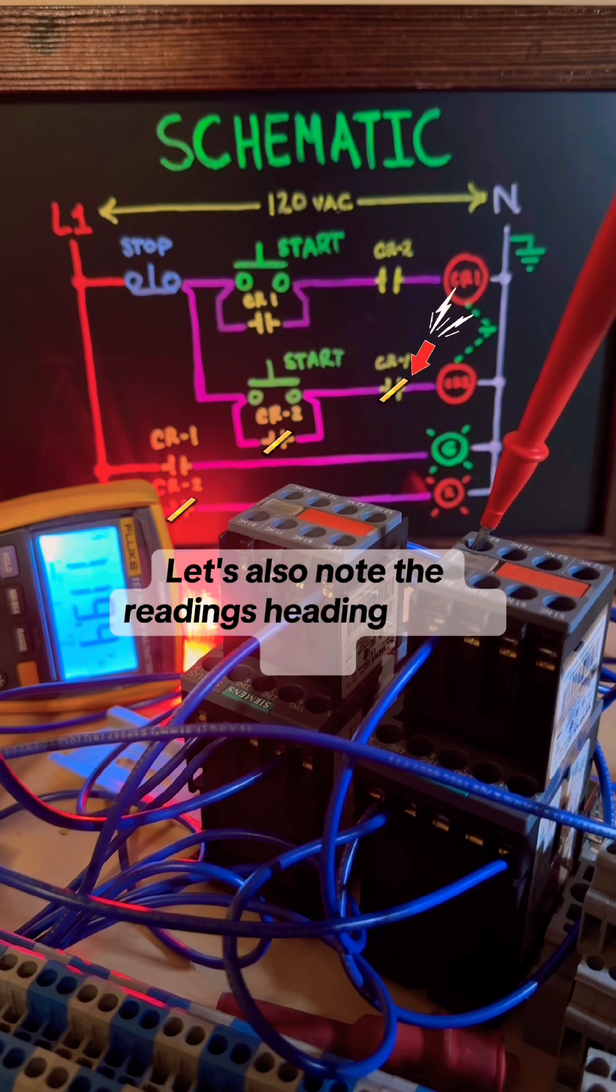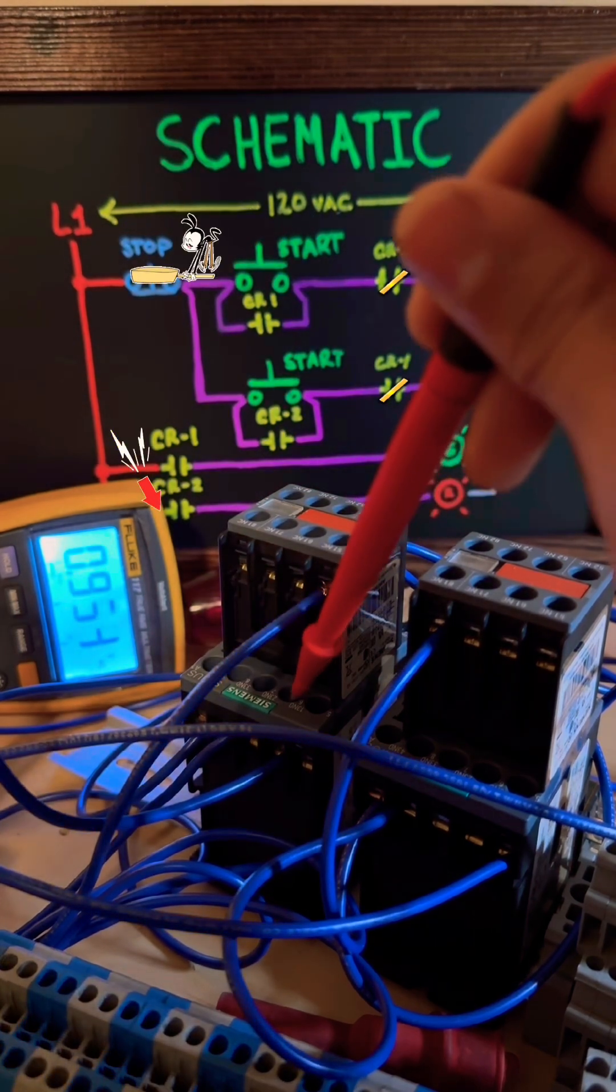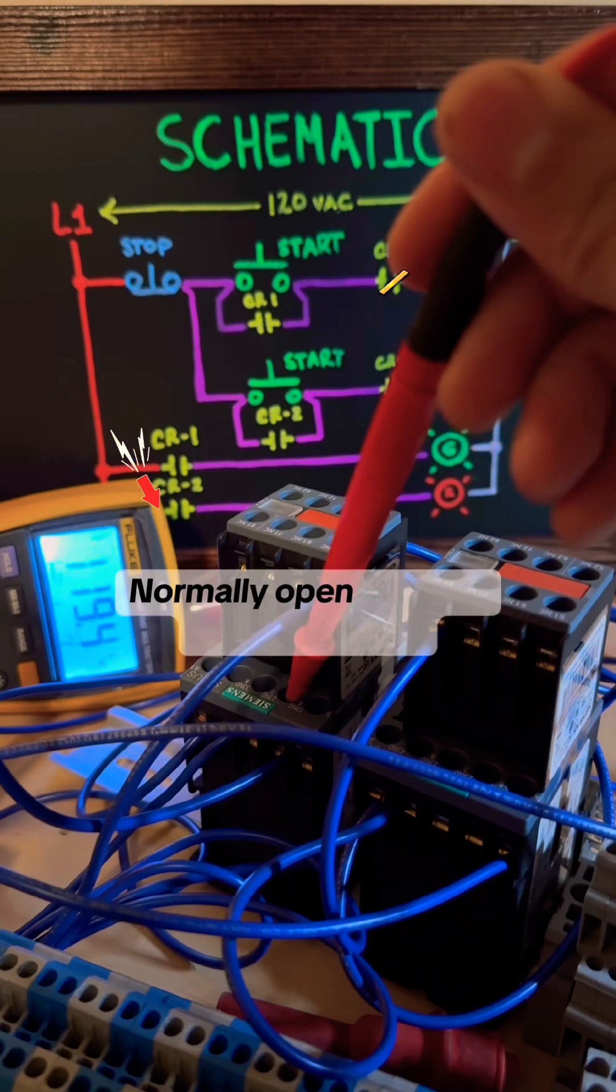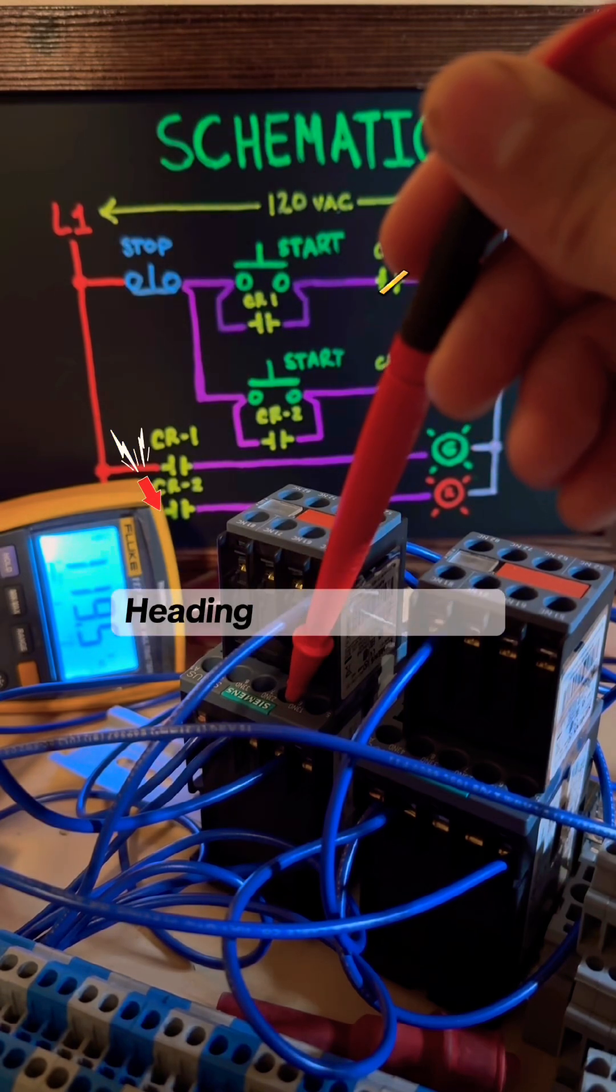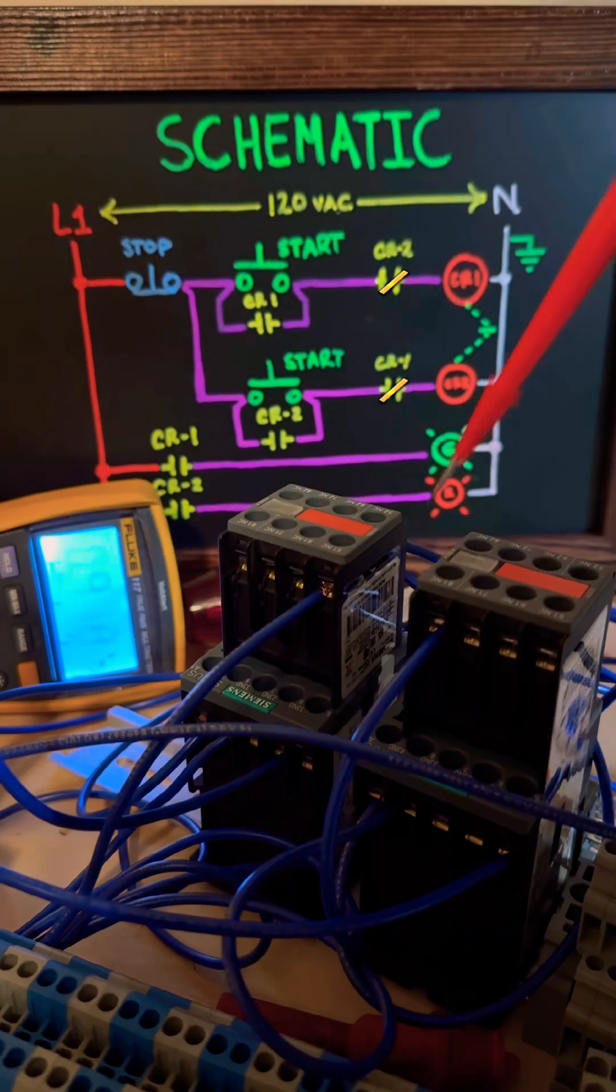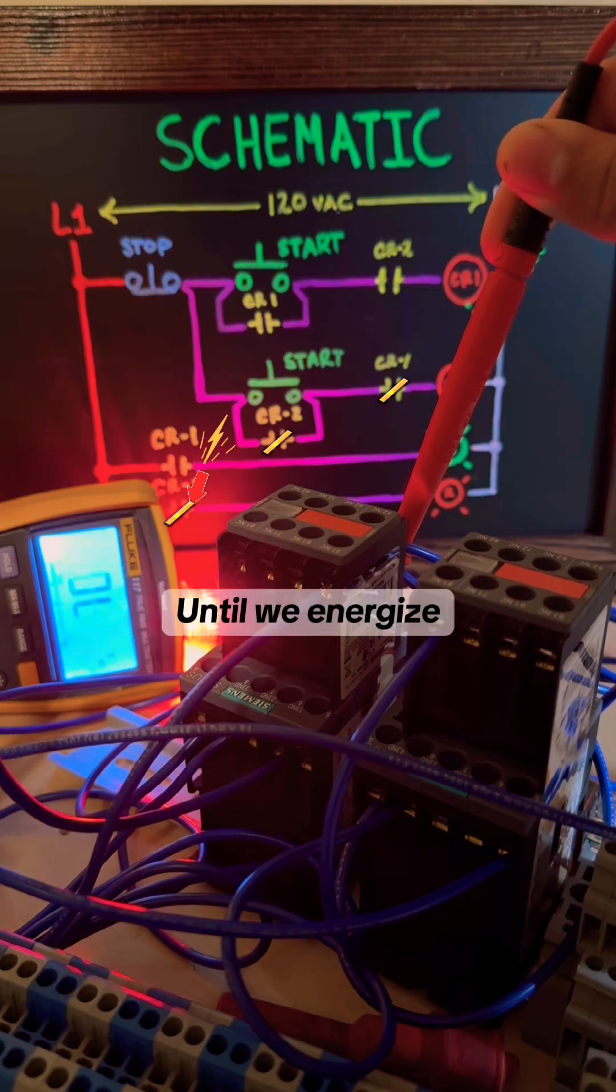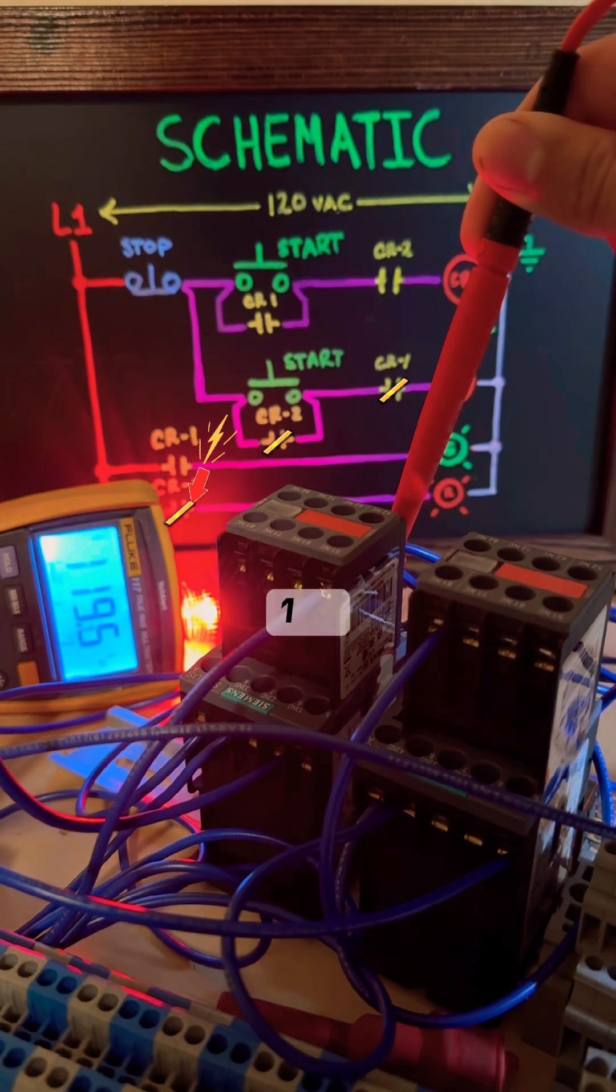Let's also note the readings heading to the light. Normally open contact, control relay two, heading to the red light. We're on the line side. Load side, zero volts. Till we energize, 120.